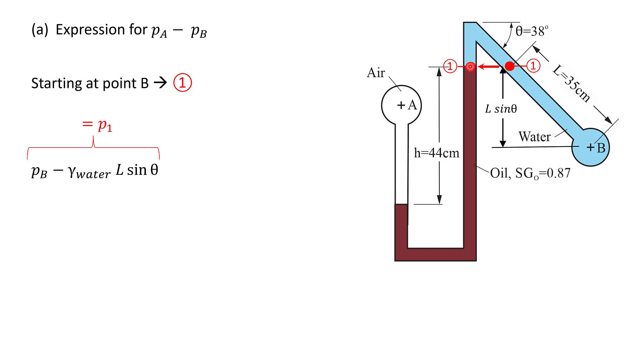Now we have the pressure at one, we can move downwards in the oil to find the pressure at point two. Now we're moving downwards so we're moving into regions of higher pressure, and the pressure at point two will equal the pressure at point one plus the specific weight of oil times the change in height of the oil, which in this case is 44 centimeters. Now we've got the pressure at two. Now we can do the same trick again, we can move across. We're at the same depth in the same fluid here, we can move across and find the pressure on the left hand side at the air-oil interface.